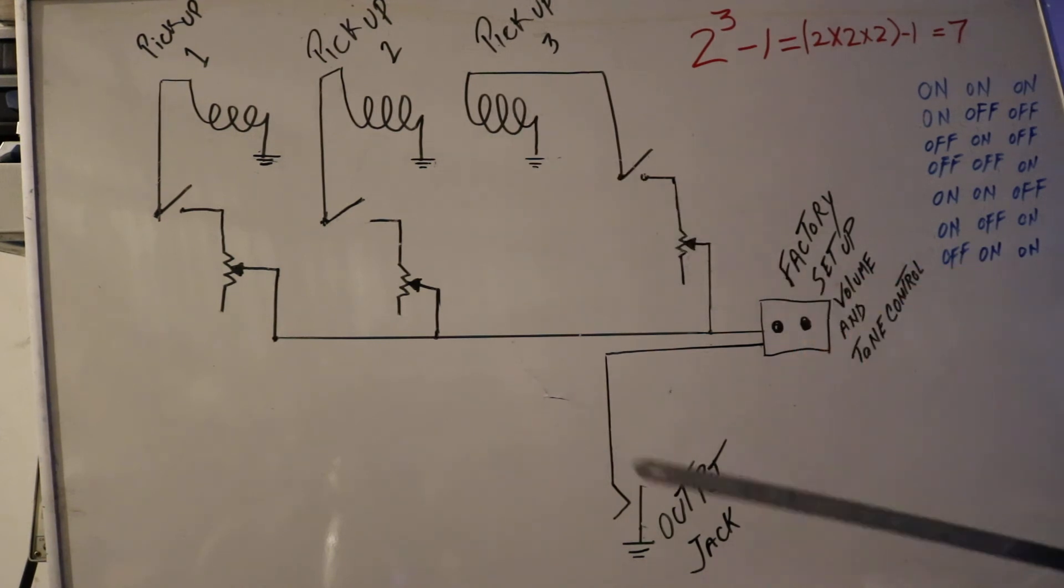All three, all the output of here - we're not going to touch the factory volume and tone control. It's going to go through the factory volume and tone control and through the output jack. The combinations we're looking for: on a factory setup you only have a five-way switch. You're going to have seven different combinations.